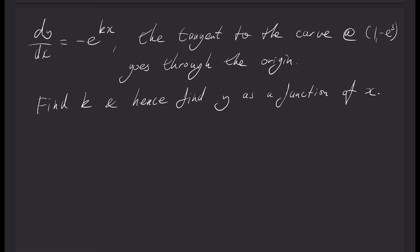Alright, this question was sent to me by a Year 12 Maths Methods student. The information that we have is that dy/dx is negative e to the kx. We know the tangent to the curve at (1, -e³) goes through the origin.